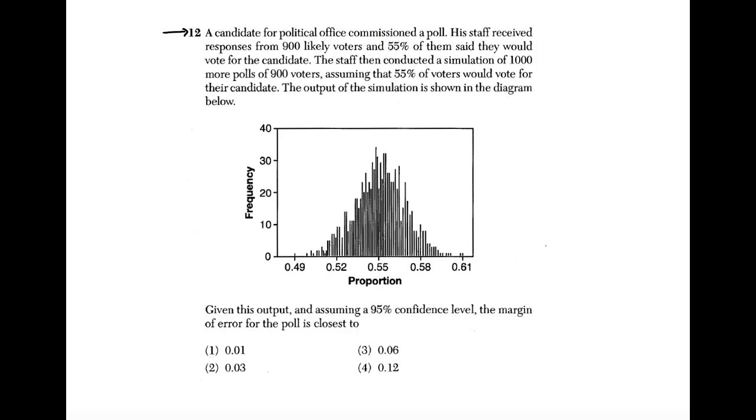So the first thing to understand is this table. The first thing you have to believe is that these bars all add up to a thousand. You can see there is a number of bars up here that have a value of 30. The ones that fall right around 55%. These are the polls where 55% of the people voted yes.